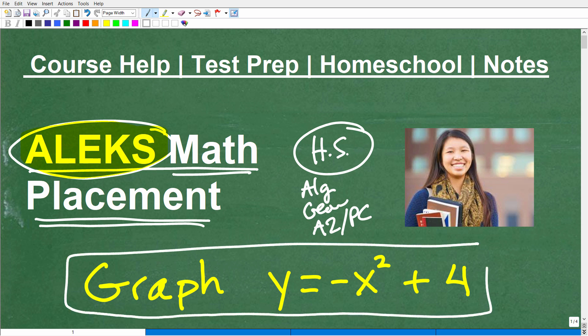But what I have here is a super easy problem. I want you to graph y equals negative x squared plus 4. This is a pretty basic algebra problem. Just give me a quick sketch of it. If you're fully prepared to do fairly well on ALEKS, you should be able to knock this out. If you can't do this, don't panic. I'm going to cover this in a second. But first, let me quickly introduce myself.